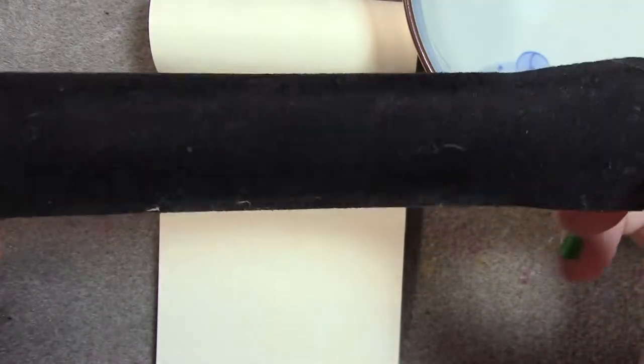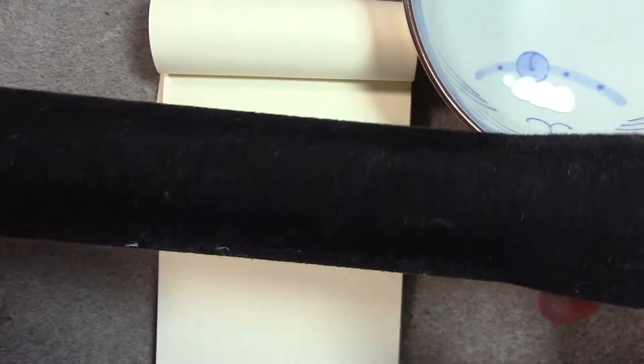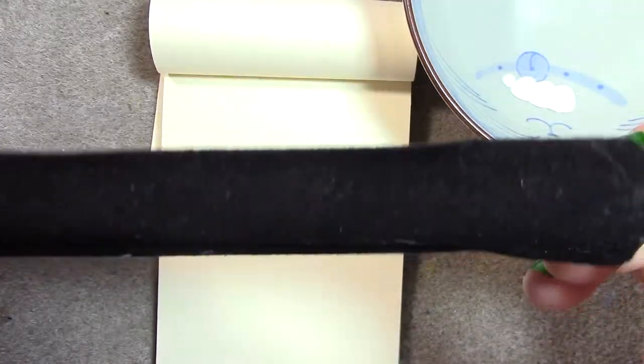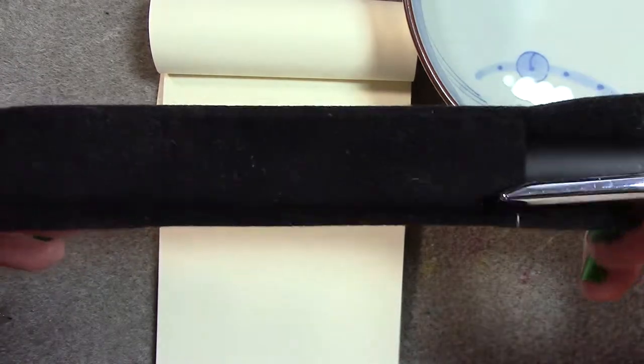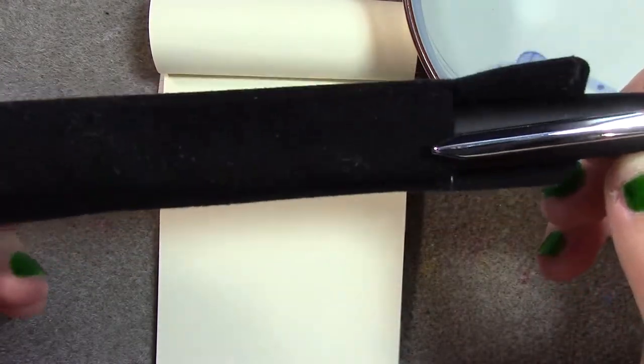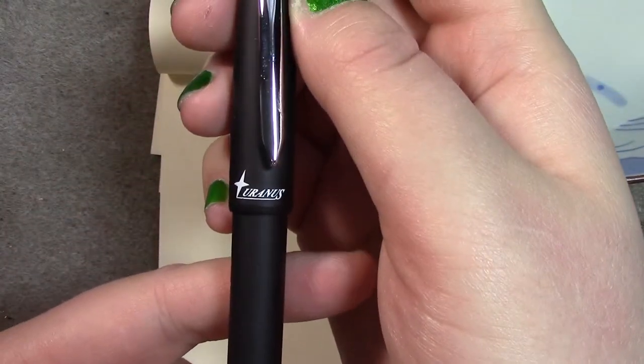This one came in this nice, lovely velveteen pen sleeve, which I've already had to attack with duct tape because it's fuzzy and it gets all the fuzz. So to make it a little more manageable, I had to remove the lint from it. But there's the pen.